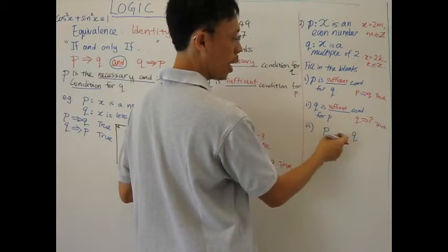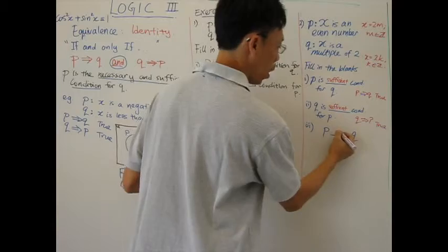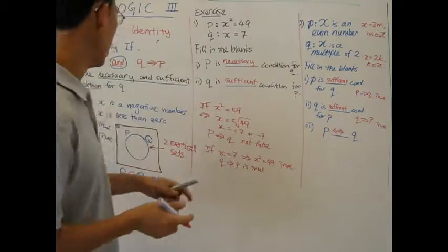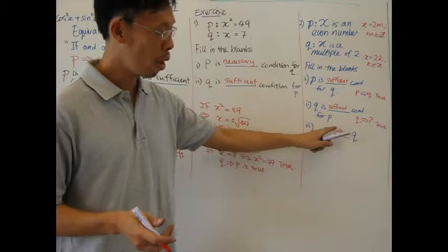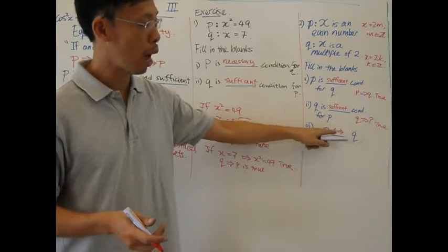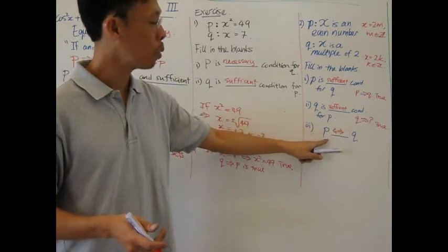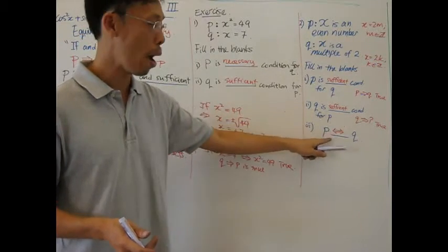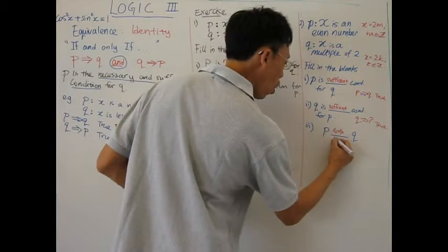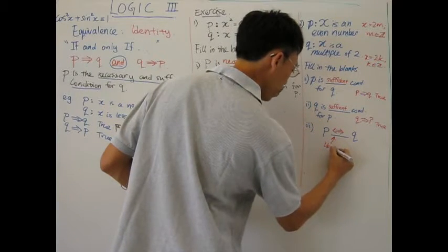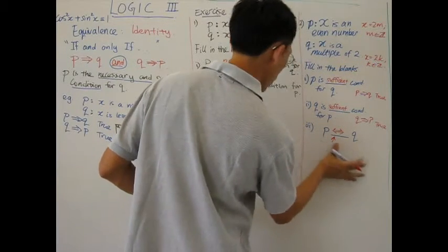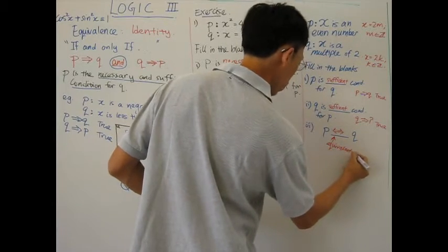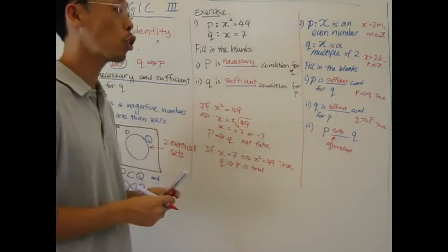Therefore, what is the sign that relates this? It has to be the double arrow. That is the sign for identity. Double arrow. P implies Q, Q implies P, so double arrow. This is the sign for equivalence. P is equivalent to Q.